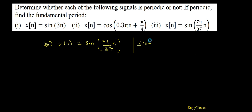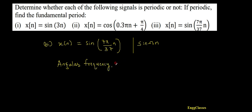Let me compare this with the standard signal, which is sine(ω·n). Therefore I can write the angular frequency: ω is equal to 7π divided by 37.